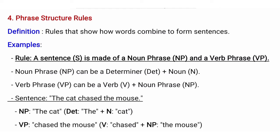Moving toward phrase structure rules: these are rules that show how words combine to form sentences. For example, a sentence is made of a noun phrase and a verb phrase. A noun phrase can be a determiner plus a noun, and a verb phrase can be a verb plus a noun phrase. In 'the cat chased the mouse,' 'the cat' is the noun phrase — where 'the' is the determiner and 'cat' is the noun — and 'chased the mouse' is the verb phrase.